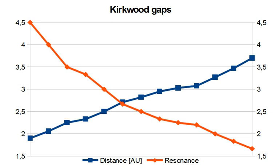Examples include the Alinda and Griqua groups. These orbits slowly increase their eccentricity on a timescale of tens of millions of years, and will eventually break out of the resonance due to close encounters with a major planet.